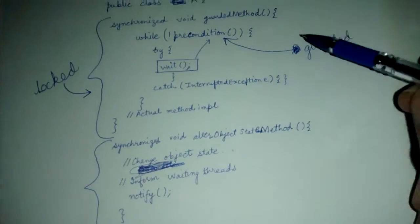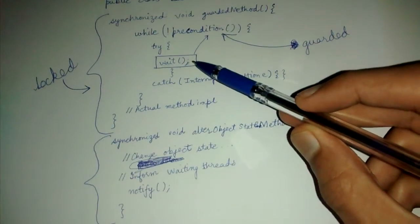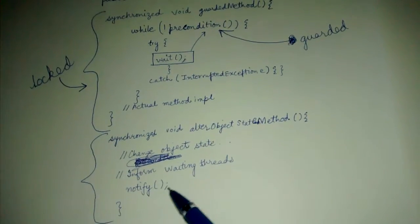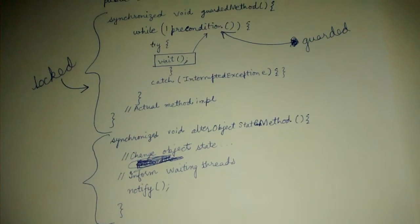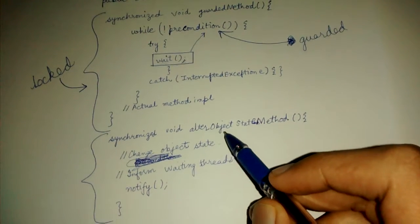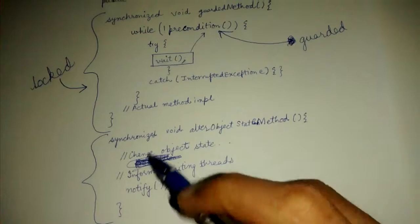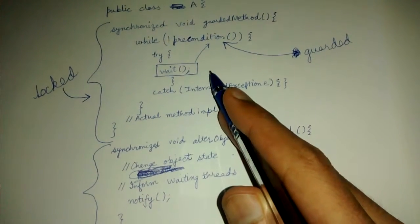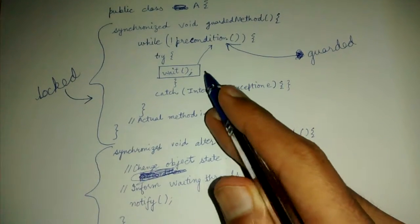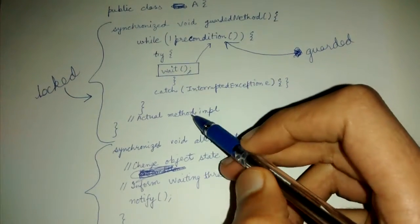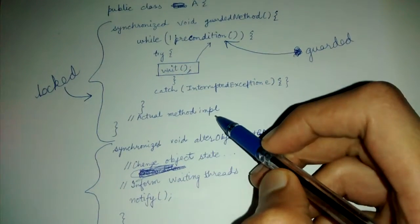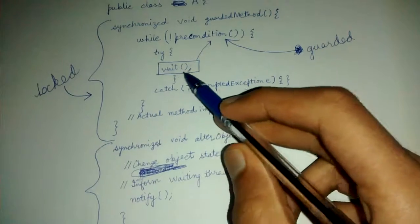So on the same object, this method can be called if I am in a wait mode. Wait means releasing the lock and sleeping for some time. What is the sometime? Till someone else notifies me. So this alter object method will change the state and notify this method.